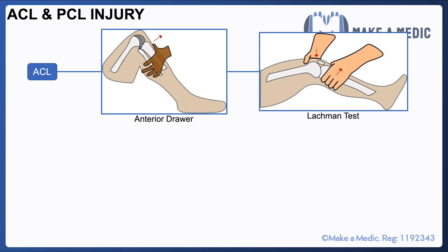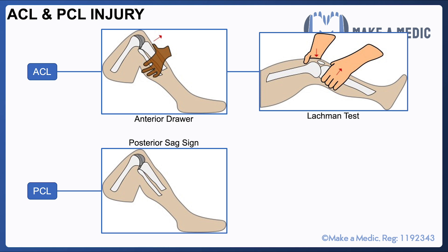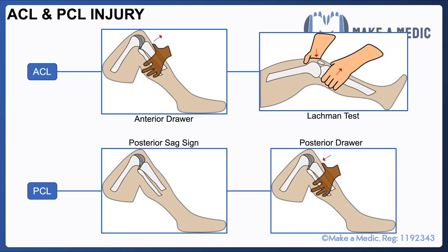With PCL injuries, the examination findings are slightly different. The posterior cruciate ligament is designed to prevent posterior displacement of the tibia relative to the femur. If you ask the patient to lie on their back and flex their knees, you may notice a posterior sag sign, where the weight of the tibia causes it to sag slightly posteriorly. You can also perform the posterior drawer test, which involves applying a little downward force on the tibia and fibula to see whether it displaces backwards.